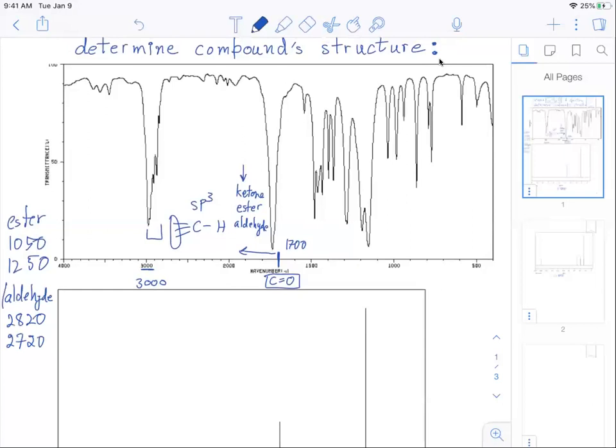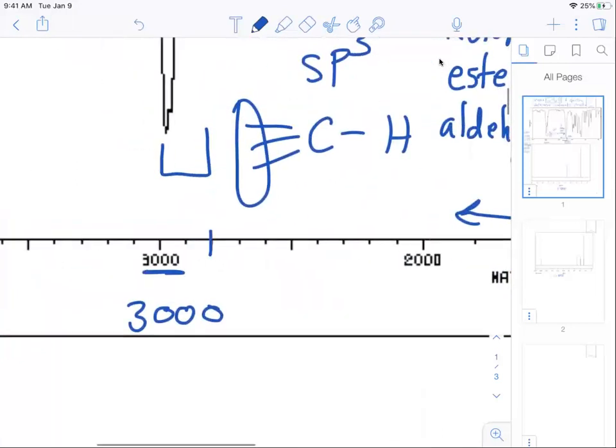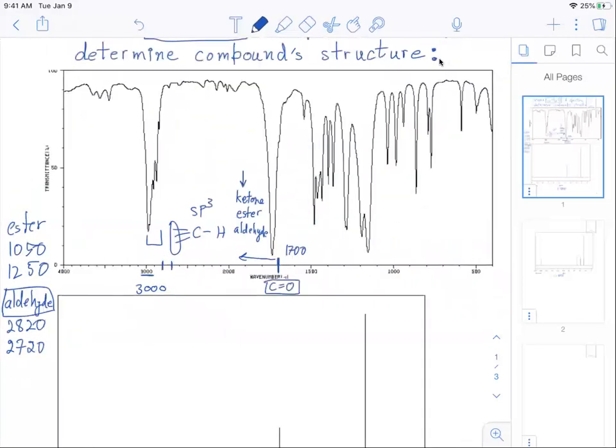So let's start with aldehyde. If we go to this area there's roughly 2800, there's roughly 2700, good enough for 2820, 2720. I'm just going to draw a line up and see what goes. I really don't see any peaks here so it's not an aldehyde. This I can rule out with a great degree of confidence.